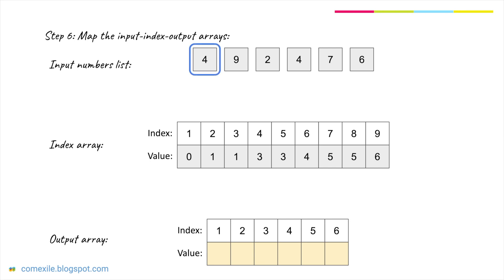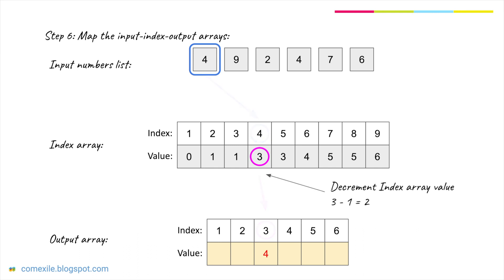The first element is 4. Find index 4 in the index array — the value of the index array is 3. Find index 3 in the output array and fill in the value. The important part of this process is to decrement the index array value. The value was 3 and after decrementing the new value should be 2.